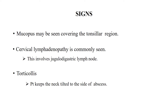Mucopus can also be seen covering the tonsillar region. There will be cervical lymphadenopathy, usually involving the jugulodigastric lymph node. The patient may also have torticollis, with the neck tilted to the affected side.